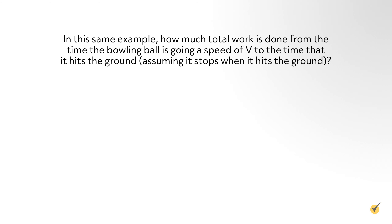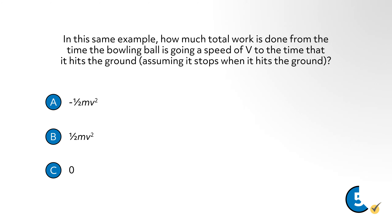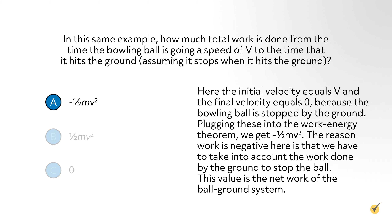In this same example, how much total work is done from the time the bowling ball is going a speed of v to the time that it hits the ground, assuming it stops when it hits the ground? The correct answer is a: negative one-half mv squared. The initial velocity equals v and the final velocity equals zero because the bowling ball is stopped by the ground. Plugging these into the work-energy theorem, we get negative one-half mv squared. The reason work is negative is that we must account for the work done by the ground to stop the ball. This value is the net work of the ball-ground system.